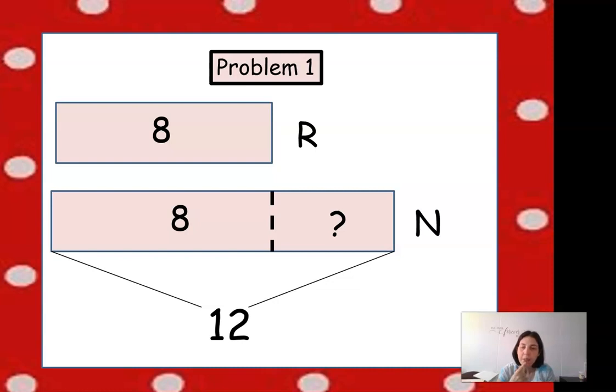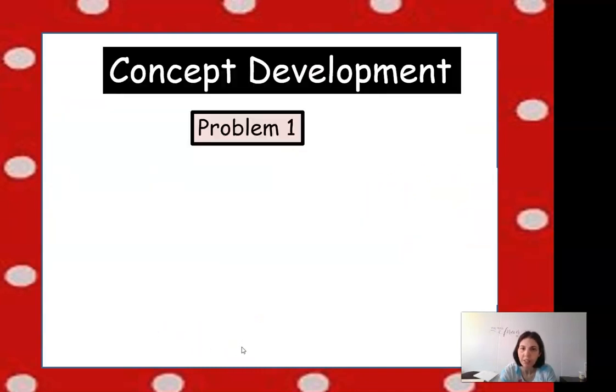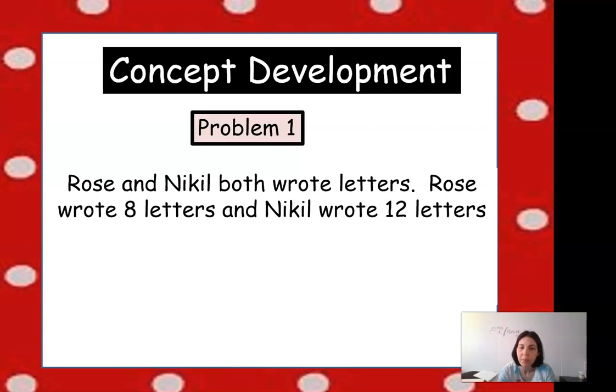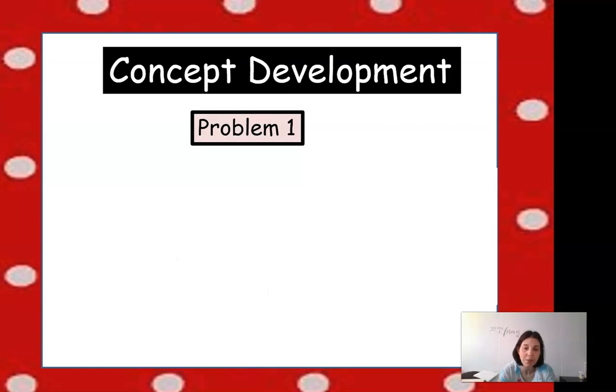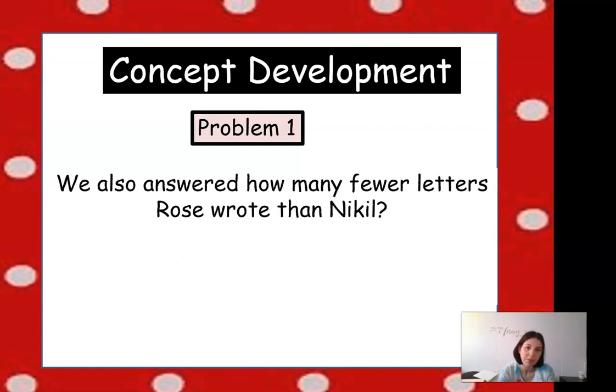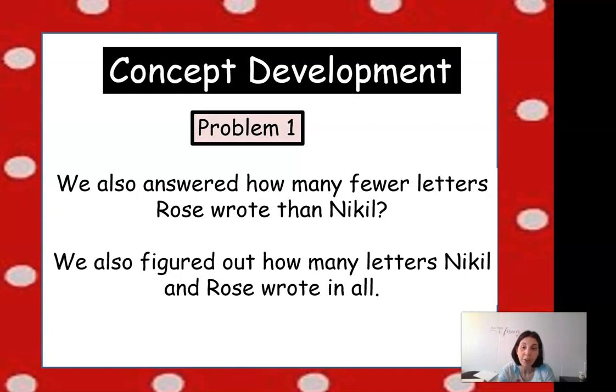What was the story that went with this tape diagram yesterday? Here's the tape diagram. Who remembers what the problem was that we learned about? I remember R for Rose and N for Nikel, and I remember that Rose wrote 8 letters and Nikel wrote 12 letters. They both wrote letters. Rose wrote 8 letters and Nikel wrote 12 letters. How many more letters did Nikel write than Rose? We also answered how many fewer letters Rose wrote than Nikel and how many letters they wrote in all.